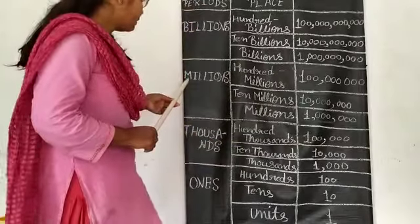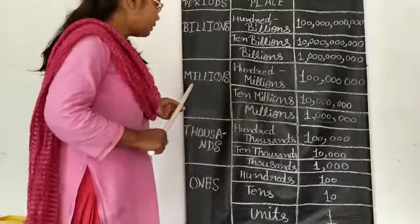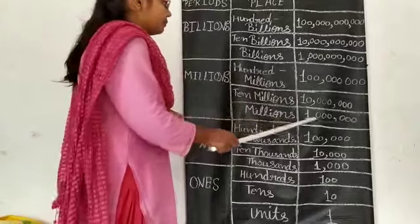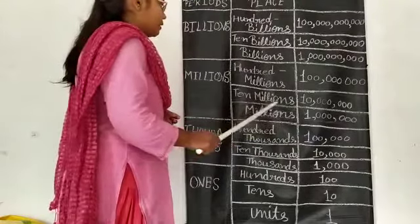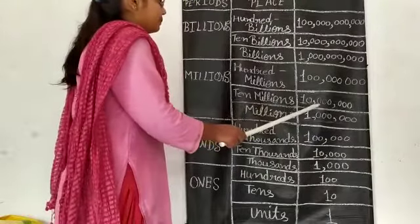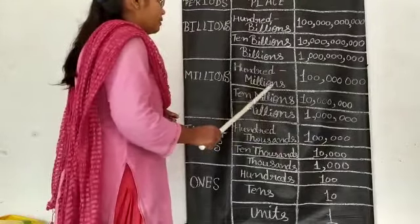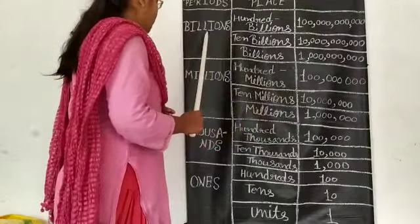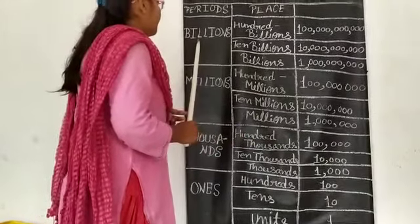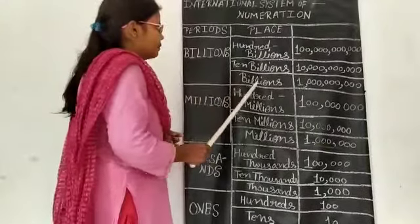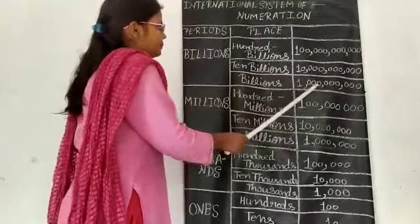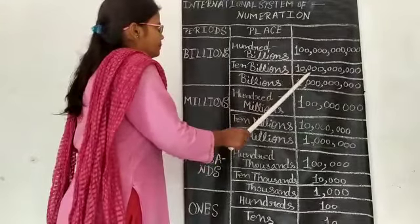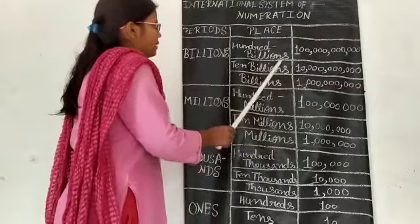Third period, millions: millions, ten millions, hundred millions. Fourth period, billions: billions, ten billions, hundred billions.